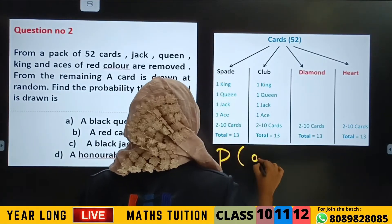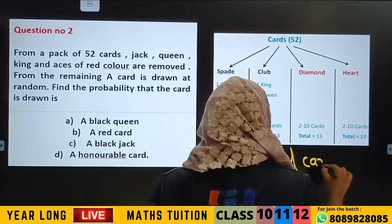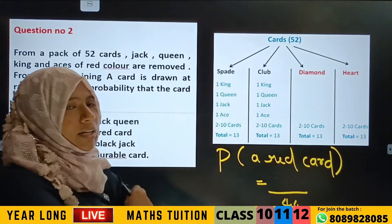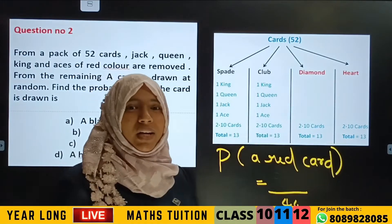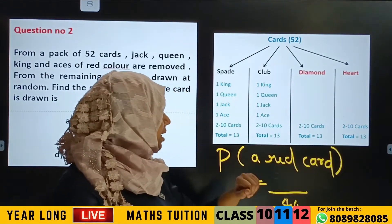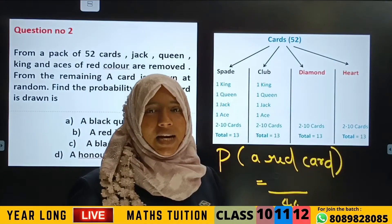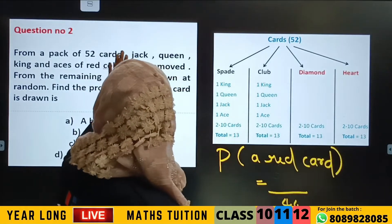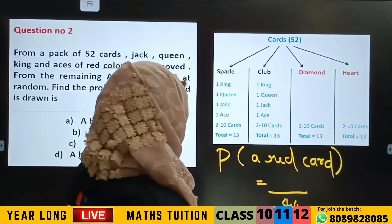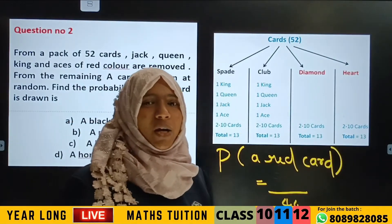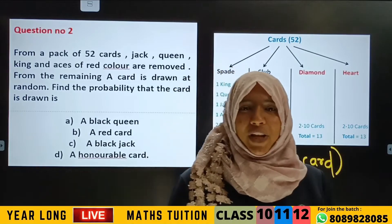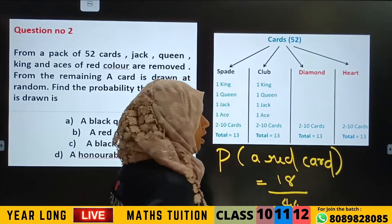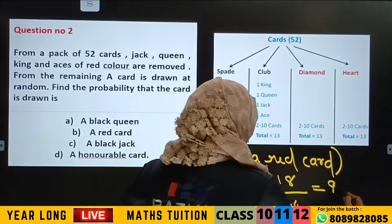Probability of getting a red card. The red card chance is divided by 44. We have 26 red cards originally, but red face cards were removed — from diamond and hearts there are no red face cards remaining. So there are 18 red cards remaining. So the probability is 18 divided by 44, simplified to 9 by 22.